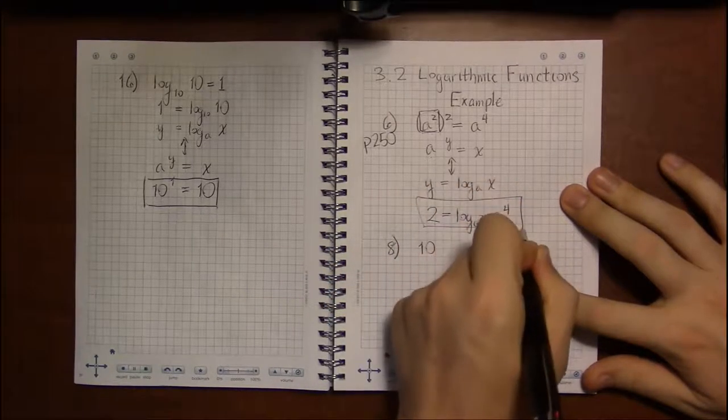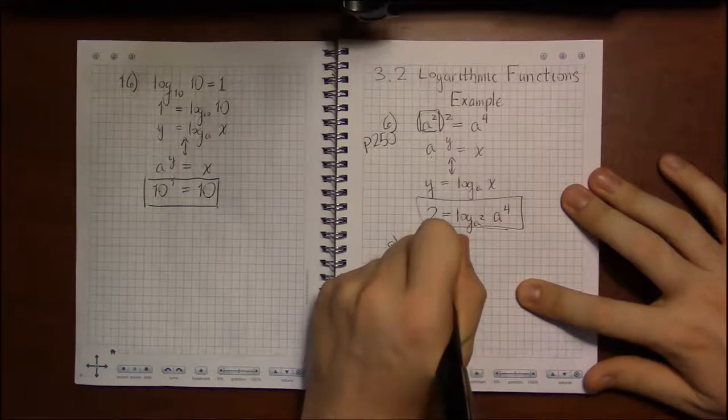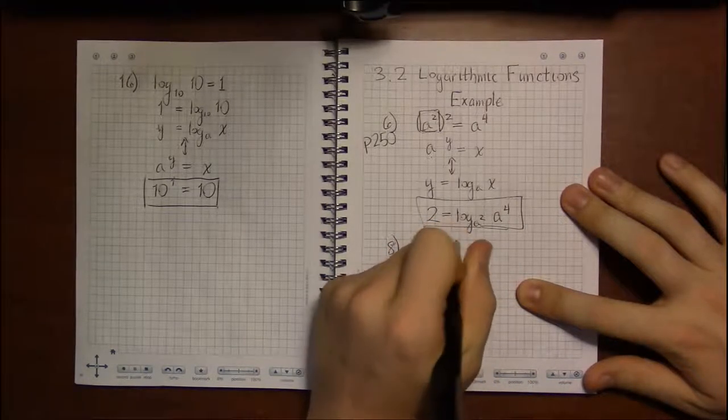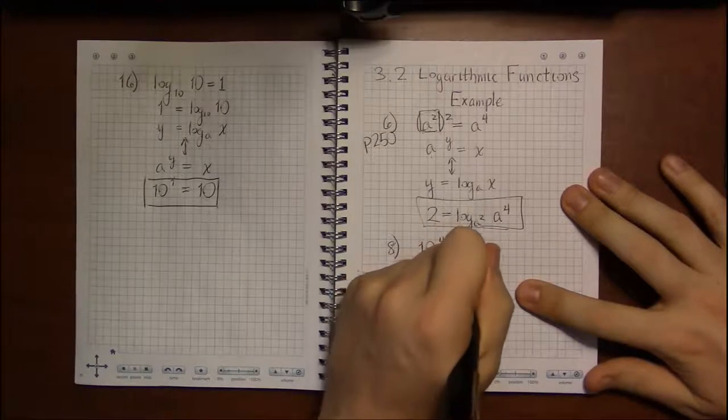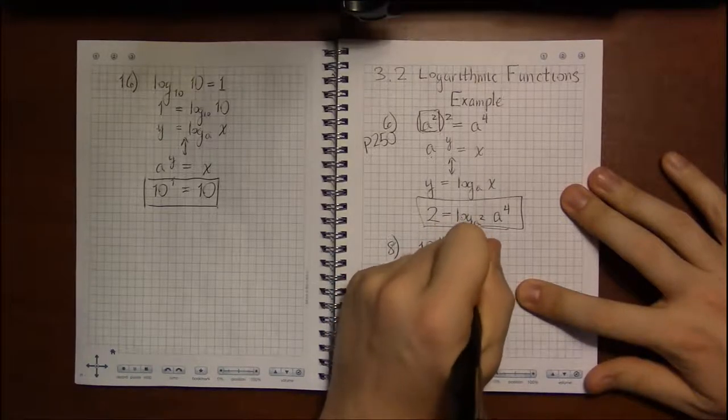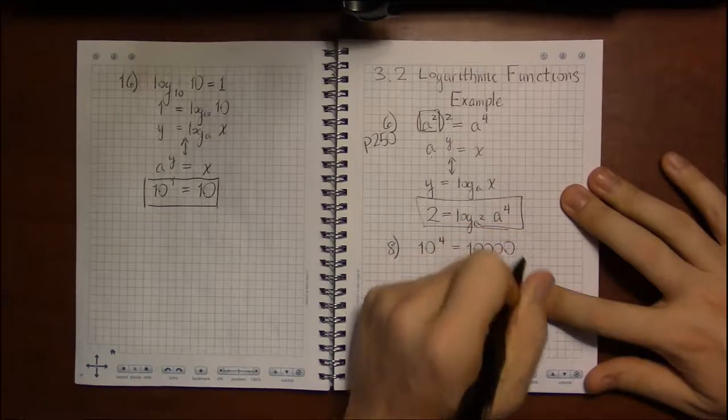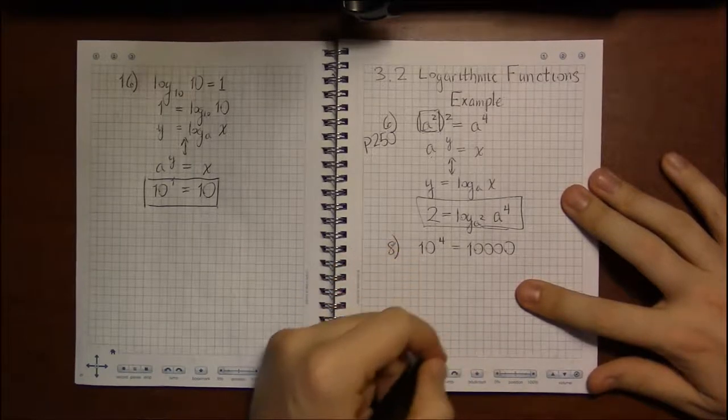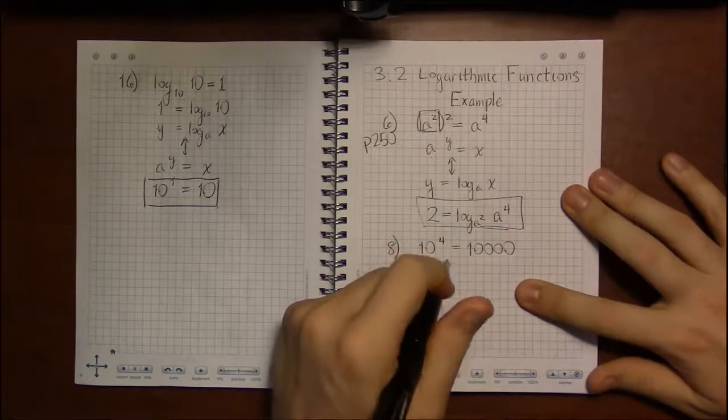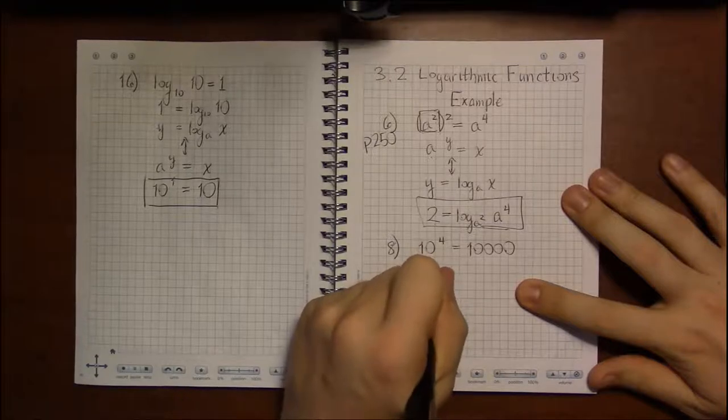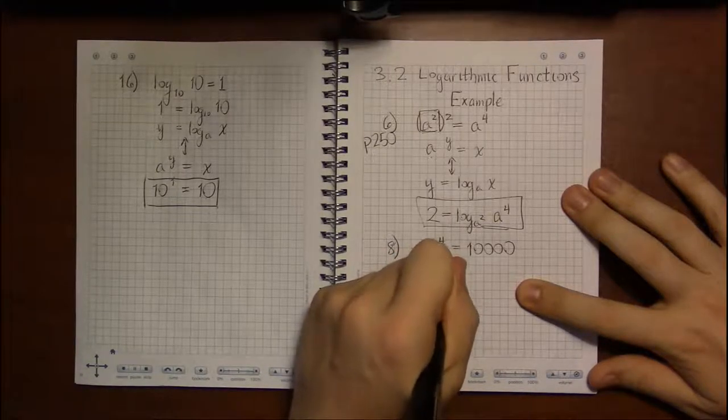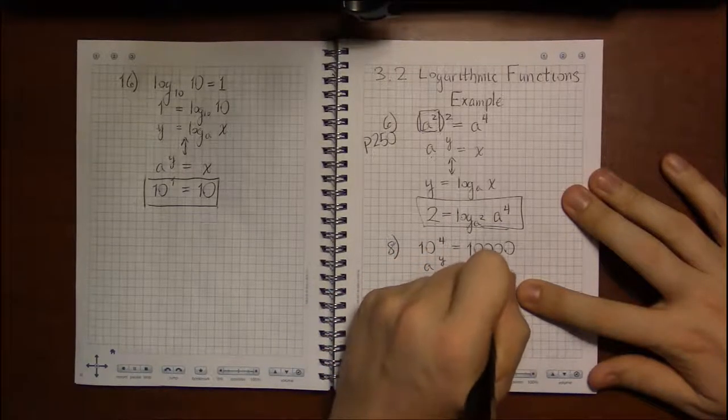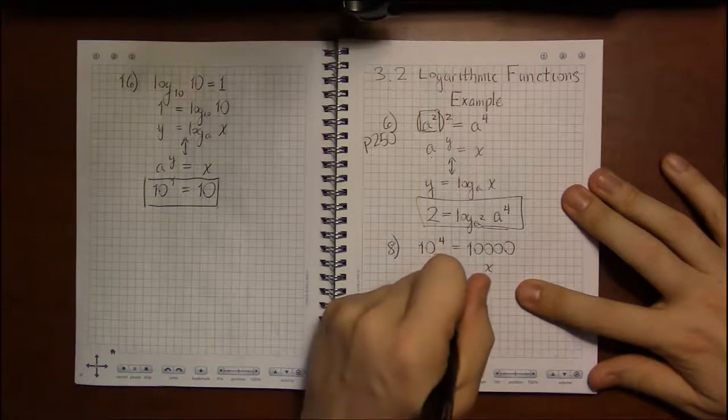On problem 8, we're asked to rewrite 10 to the fourth equals 10,000, to rewrite this equation in its logarithmic form. This should be hopefully a little bit simpler, because a is clearly 10, y is 4, and x is 10,000.